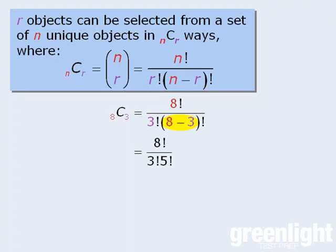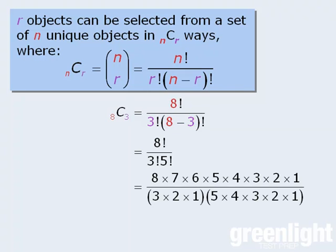To evaluate this, we'll expand the factorials, and at this point we can cancel some of the numbers in the numerator and denominator. We'll begin by canceling the 5s, 4s, 3s, 2s, and 1s from the top and bottom.